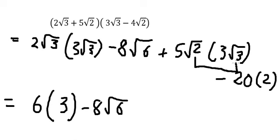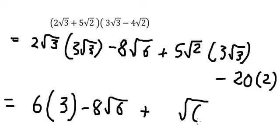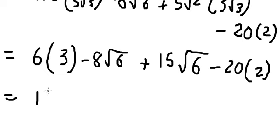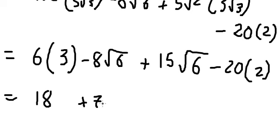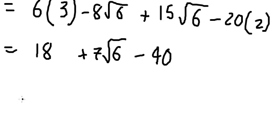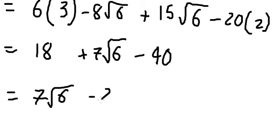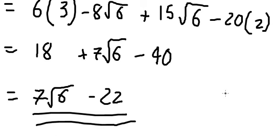The square root of number 2 and the square root of number 3: 2 with 3 gives us 6, and 5 with 3 gives us 15. So we have 18. 15 minus 8 gives us positive 7. 20 with 2 gives us negative 40. 18 minus 40 gives us negative 22. This is the final answer. Thank you for watching.